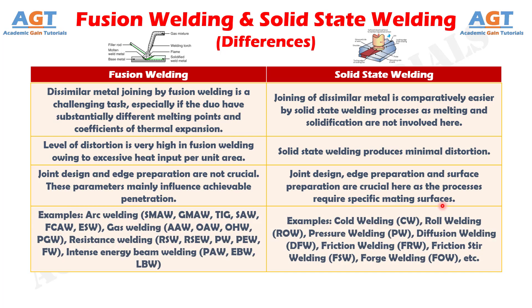Difference number nine: examples of fusion welding processes include different types of arc weldings, gas weldings, resistance weldings, and intense-energy beam weldings as we can see here. Whereas, examples of solid-state welding processes include cold welding, roll welding, pressure welding, diffusion welding, friction welding, friction stir welding, forge welding, etc., as we can see here.